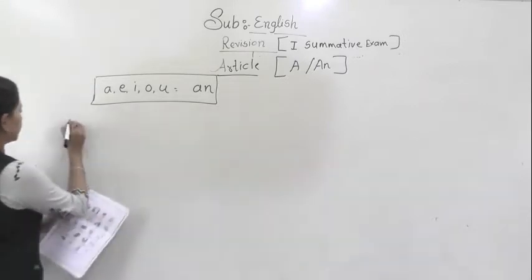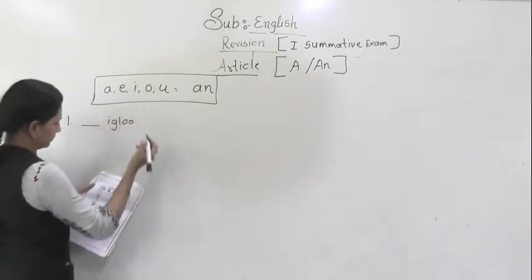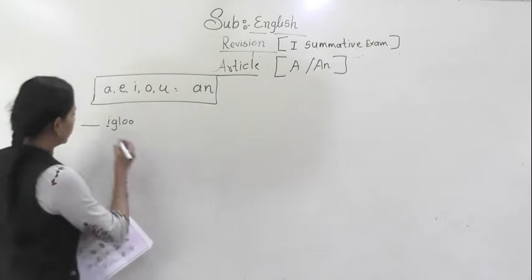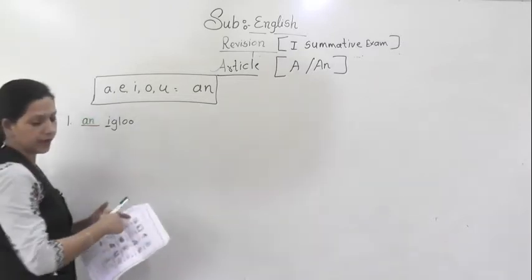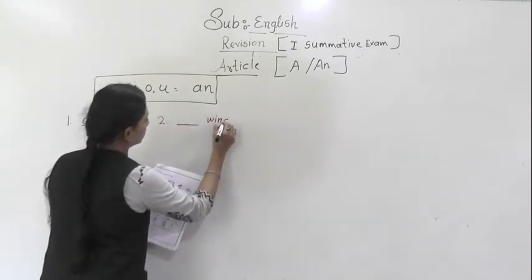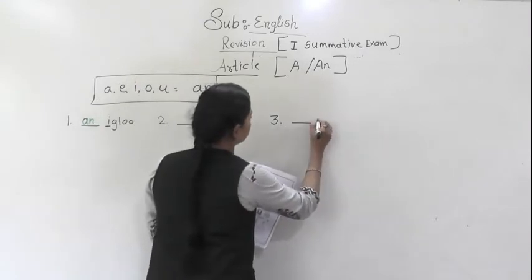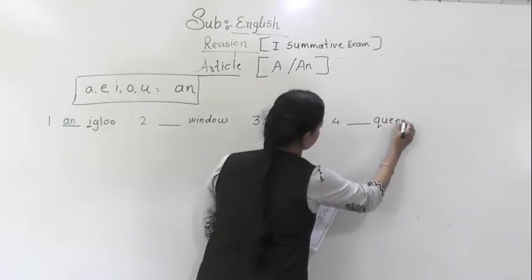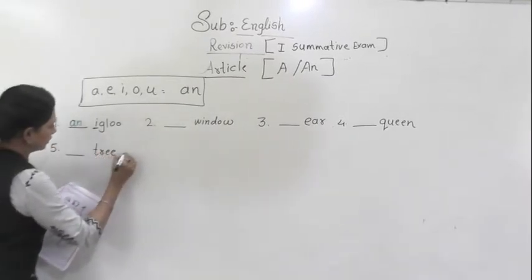Let's start. The first is igloo. I am just writing the spelling. What will come? You have to see the first letter. This is I. So, I is a vowel. So, what will come here? An. Second one is dash window. Number three, just let me complete this work. Year. Number four. Queen. Number five. Tree.